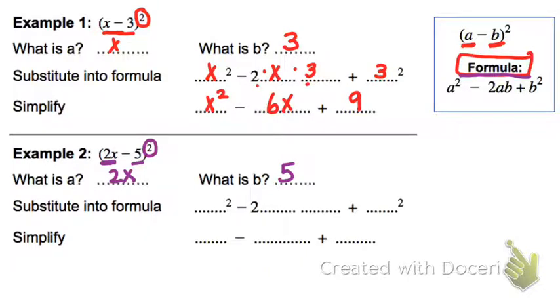So now that I know what my a and b are, I'm going to substitute them into the formula. So it would be 2x squared, that whole thing. It's not just x squared, the 2 is also squared. Minus 2 times a times b, so 2 times 2x times 5, plus b squared, so plus 5 squared.